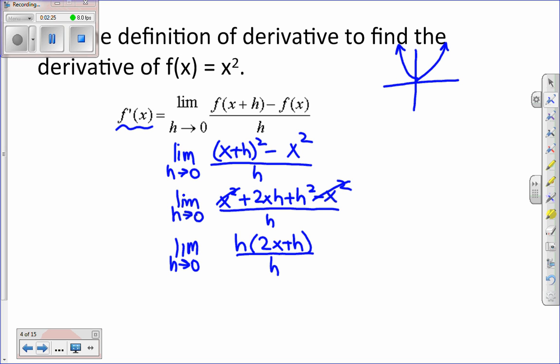And the h is reduced out. So I'm left with the expression 2x plus h. And as h approaches 0, then our derivative function will be 2x. And that's using the definition we established in Chapter 2.